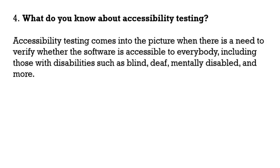The fourth question is: what do you know about accessibility testing? Accessibility testing comes into picture when there is a need to verify whether the software is accessible to everybody, including those with disabilities such as blind, deaf, mentally disabled, and more. For example, for blind users, there is a tool called NVDA — one of the popular tools — which reads out whatever text is present on the screen, allowing them to listen and provide input.